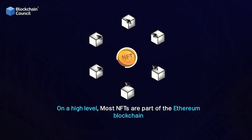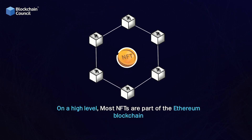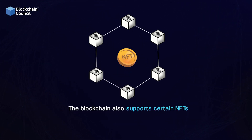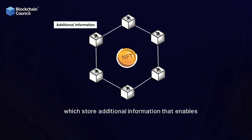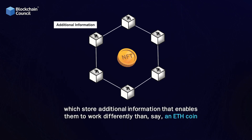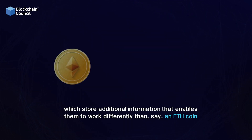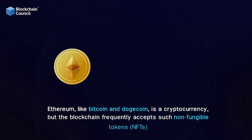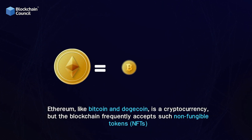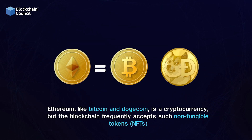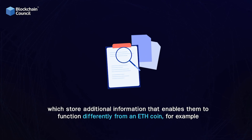On a high level, most NFTs are part of the Ethereum blockchain. The blockchain also supports certain NFTs which store additional information that enables them to work differently than, say, an Ethereum coin. Ethereum, like bitcoin and dogecoin, is a cryptocurrency, but the blockchain frequently accepts non-fungible tokens which store additional information that enables them to function differently from an Ethereum coin.